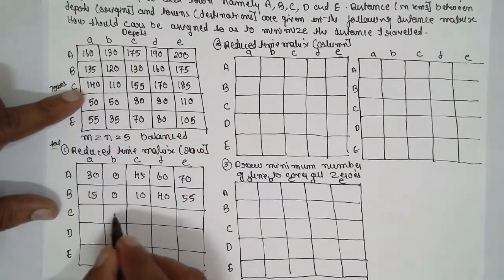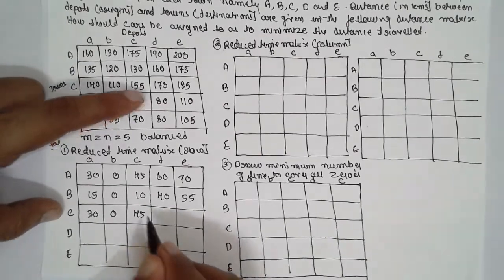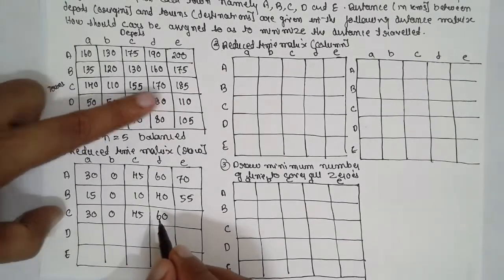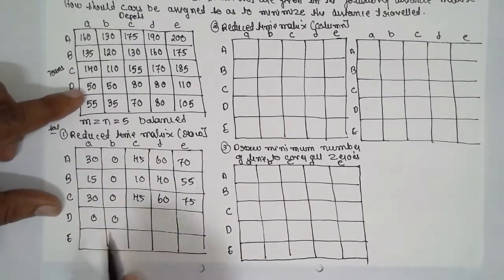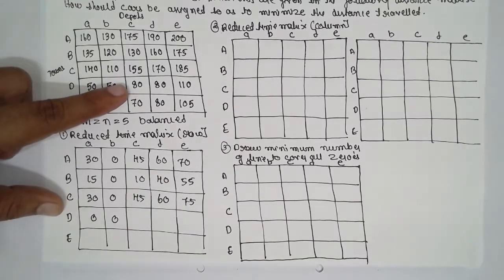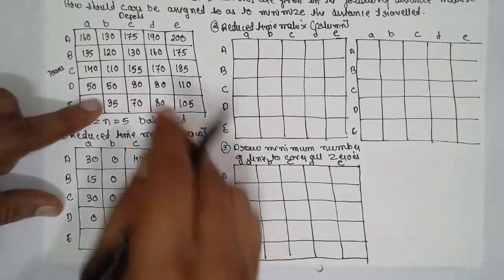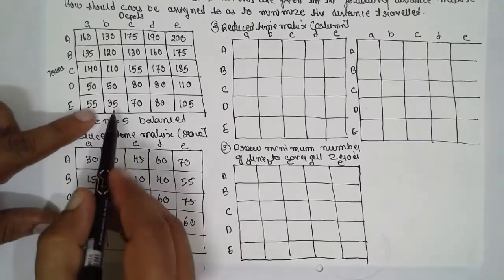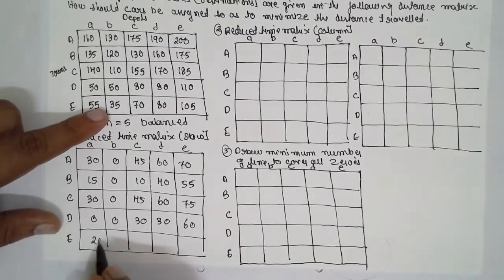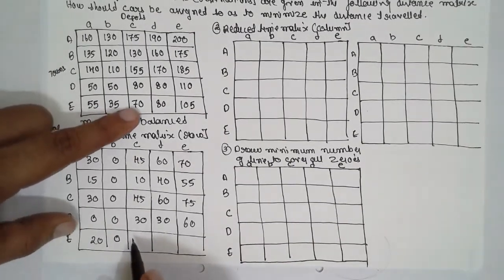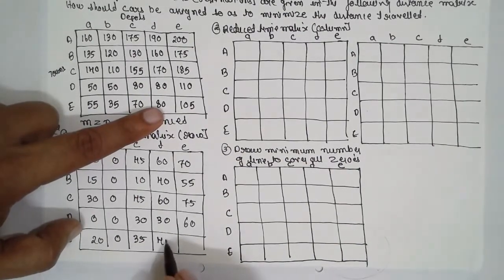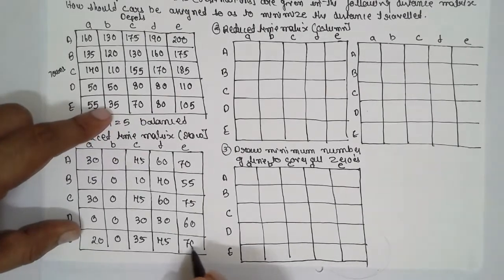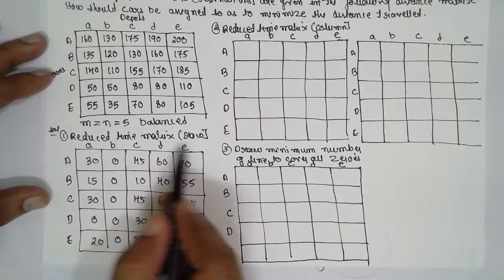For row 3, the smallest is 110: 140 minus 110 is 30; 110 minus 110 is 0; 115 minus 110 is 5; 170 minus 110 is 60; 185 minus 110 is 75. For row 4, the smallest is 50: giving 0, 0, 0, 30, and 60. For row 5, the smallest is 35: 55 minus 35 is 20; 35 minus 35 is 0; 75 minus 35 is 40; 80 minus 35 is 45; 105 minus 35 is 70. The matrix has been reduced row-wise.